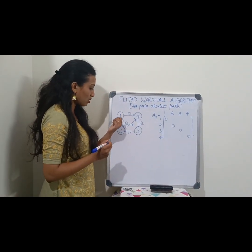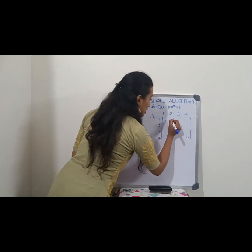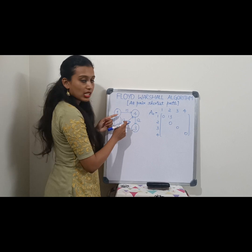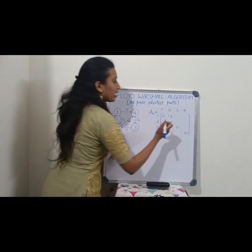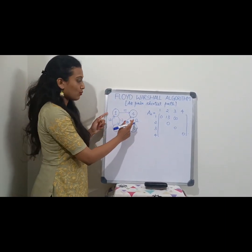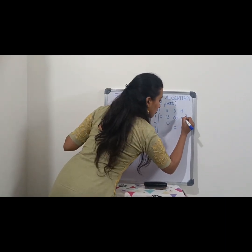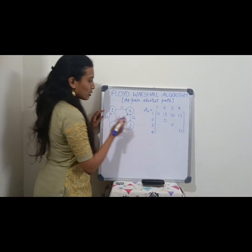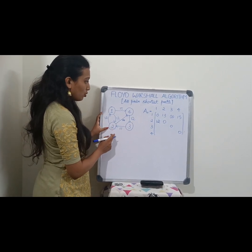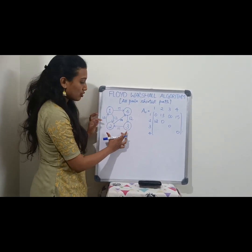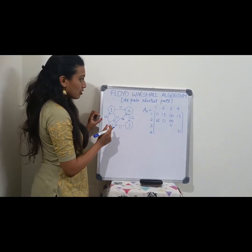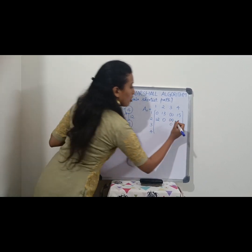The distance between vertex 1 to vertex 2 is 13. Since there is no direct edge between vertex 1 and vertex 3, we'll write it as infinity. The distance between vertex 1 to vertex 4 is 15. Distance between vertex 2 to vertex 1 is 12. There is no direct edge between vertex 2 to vertex 3, so we write infinity. Distance from 2 to 4 is 14.